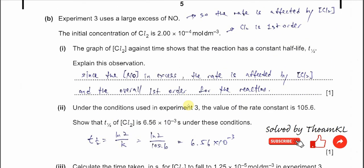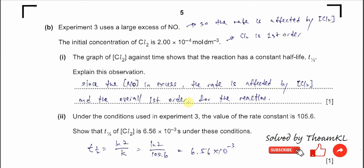Part B. Experiment 3 uses a large excess of NO. This means the concentration of NO will not really affect the rate of reaction because it is in excess. Now the rate is affected only by the chlorine concentration. That is the meaning of large excess.